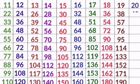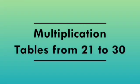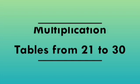20 1s are 20, 20 2s are 40, 20 3s are 60, 20 4s are 80, 20 5s are 100, 20 6s are 120, 20 7s are 140, 20 8s are 160, 20 9s are 180, 20 10s are 200. Welcome back to my channel. In this video, we are going to learn tables from 21 to 30.